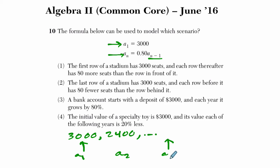So any term in the sequence here, a sub n equals 0.8 times the term before it. So would it model the first situation? The row of a stadium has 3,000 seats and each row thereafter has 80 more seats? Well, that would be an arithmetic sequence. This is a geometric sequence because we're multiplying each term instead of adding or subtracting.